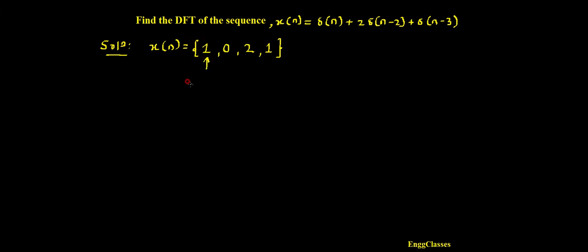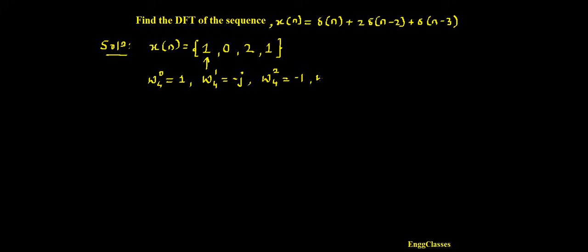Before applying the DFT formula, let me write down the twiddle factor values. W4^0 = 1, W4^1 = −j, W4^2 = −1, and W4^3 = +j. These are the four twiddle factors we must know to find the four-point DFT of the sequence.